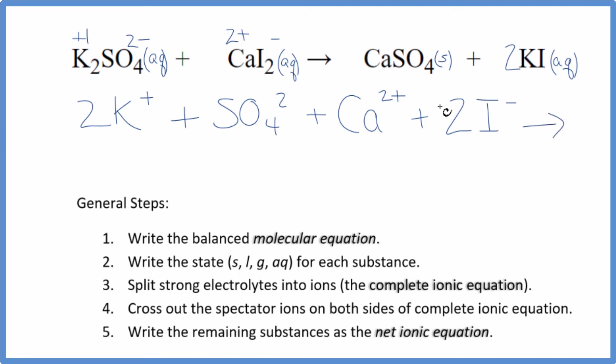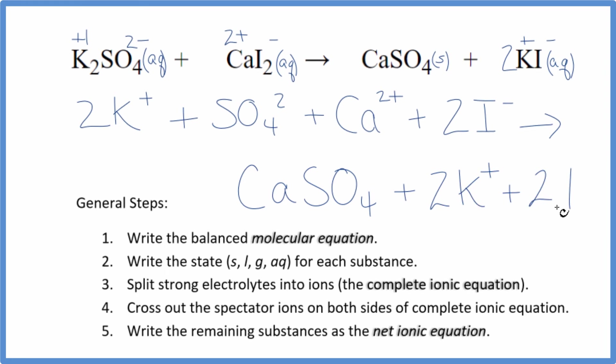And these are the reactants in the net ionic equation. In net ionic equations, we don't split solids apart. So we're just going to write CaSO4. Leave that together. And then potassium and then iodine. So we have two potassium ions and then two iodide ions.